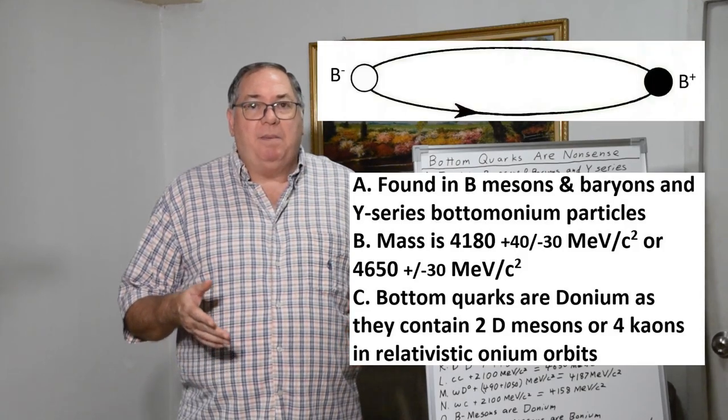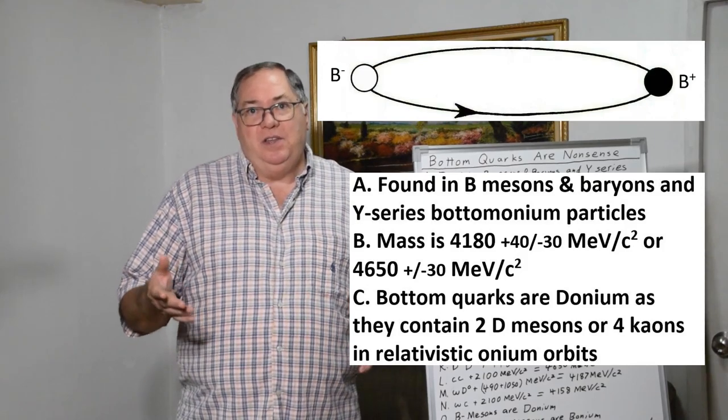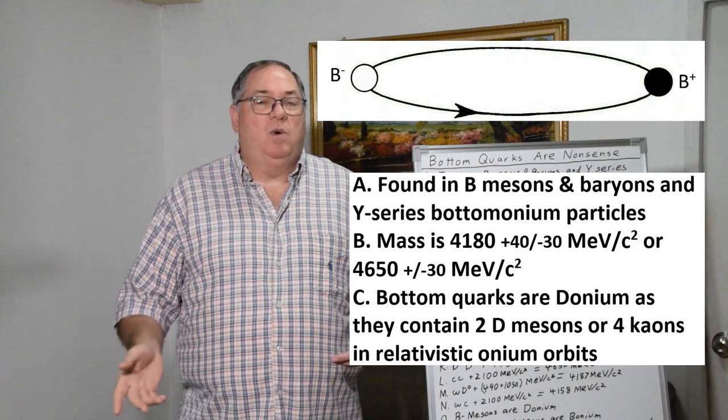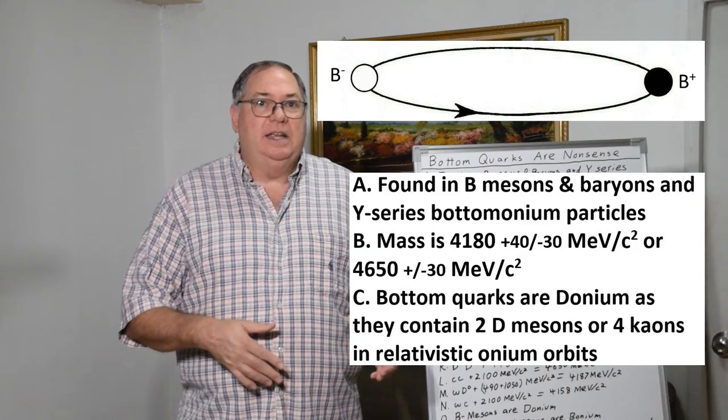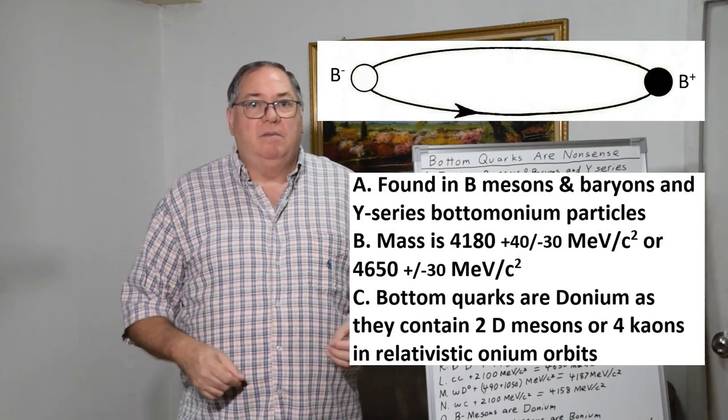The bottomonium tells you that they're already having to use onium theory in order to extend the quark model, just like they did with charm quarks where they have charmonium resonances.